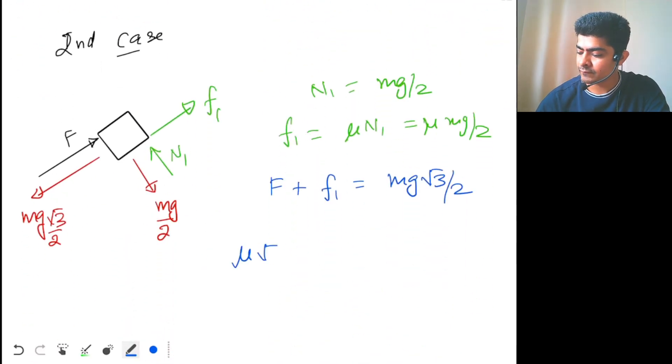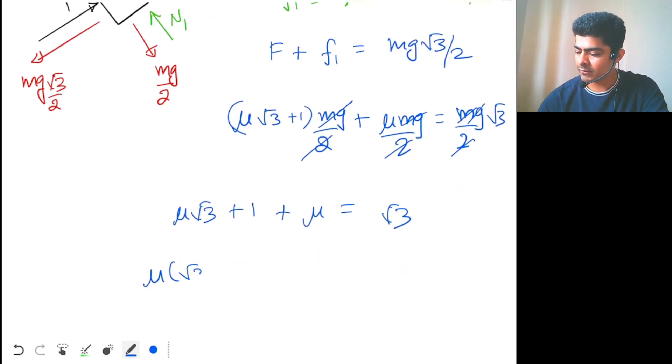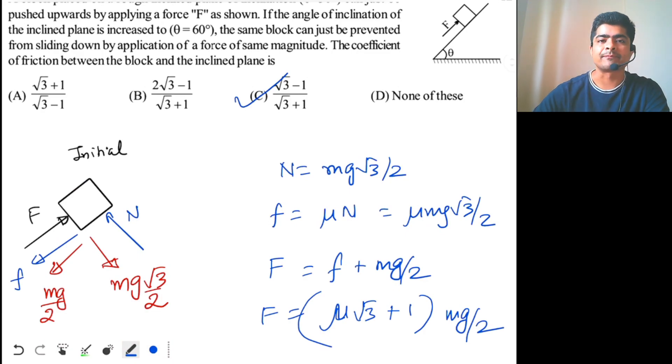so mu root 3 plus 1 mg by 2 plus F1 is mu mg by 2. So mu times root 3 plus 1 is equal to root 3. Now it's very easy, the answer will be option C.